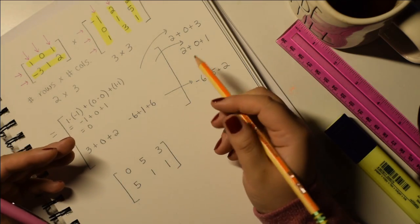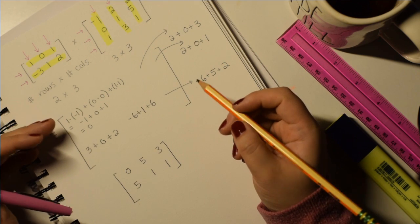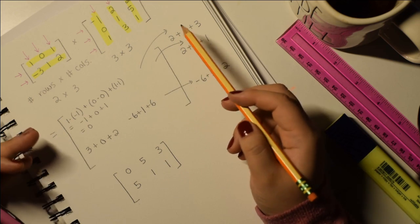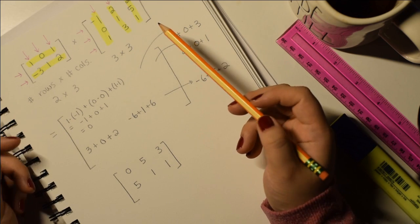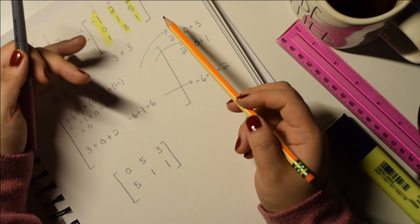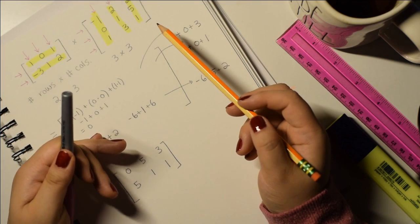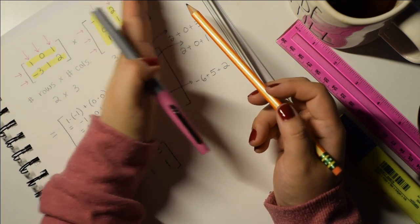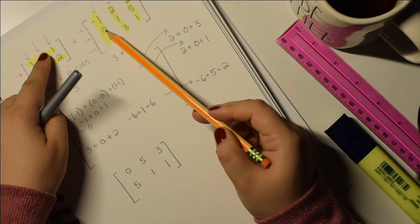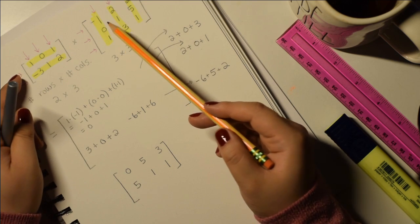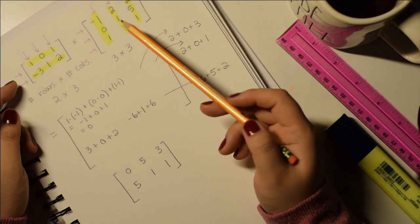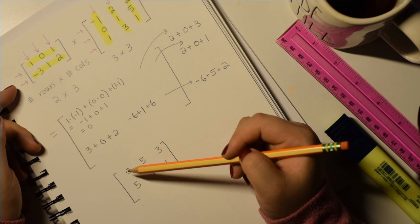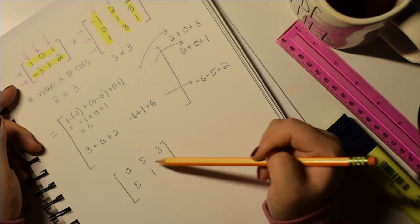And that is it — that's as simple as that. I know it looks like a lot, but the pattern is actually always the same. You just go row by row of your first matrix, and you multiply each corresponding term for each column, then add those together. That gives you the number to put in each of those corresponding spots.